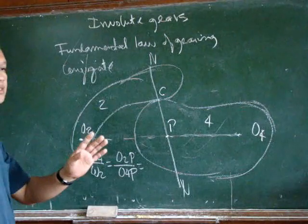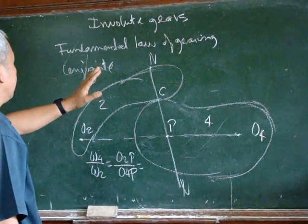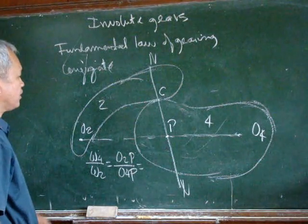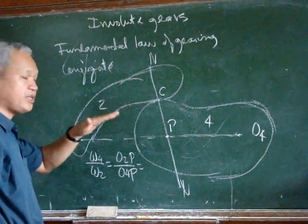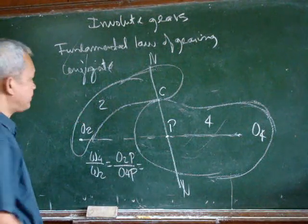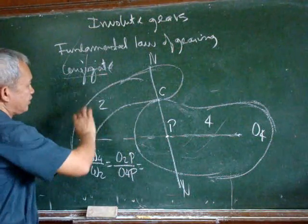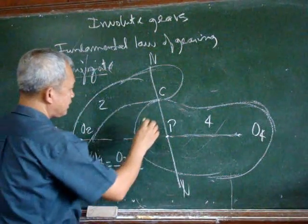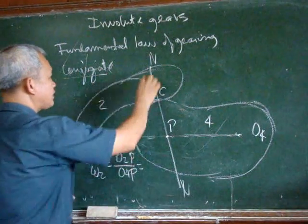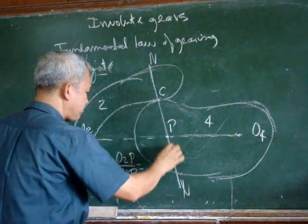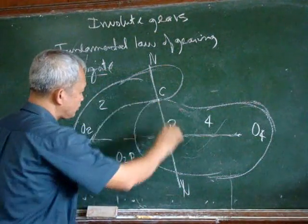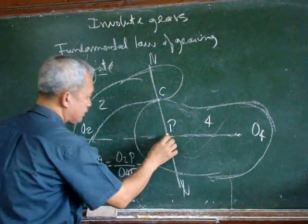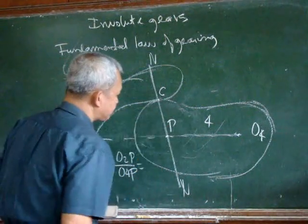In involute gears, the fundamental law of gearing must be satisfied, and so the shape of the bodies in contact must be conjugated. Considering these two bodies, body 2 and body 4, we have a point of contact C. There is a common normal passing through the point of contact, and the common normal intersects the line of centers of the two bodies. That intersection is point P.